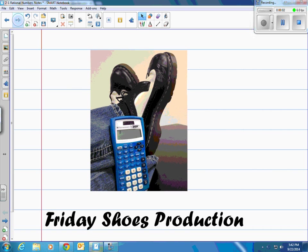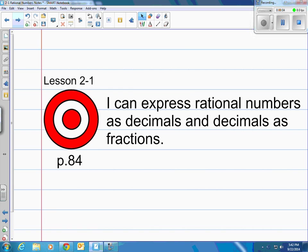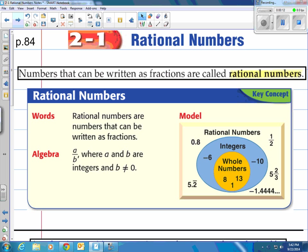This is a Friday Shoes production, lesson 2-1 in the book on page 84. The target is I can express rational numbers as decimals and decimals as fractions.